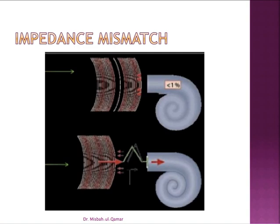Without the middle ear system, 99.9% of sound waves would be reflected back from the oval window. With impedance matching, the middle ear allows around 60% of the sound energy to be dissipated in the inner ear.